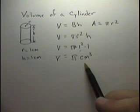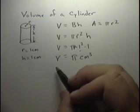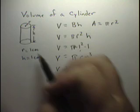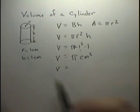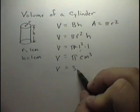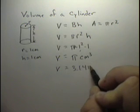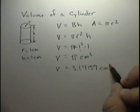So the volume is pi, in which case the volume of this cylinder, given the constraints that we've applied, would be 3.14159 centimeters cubed.